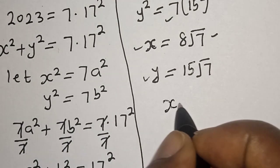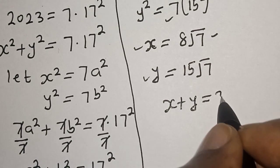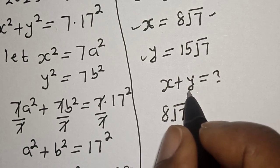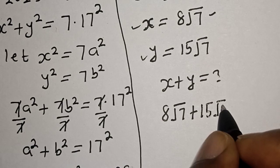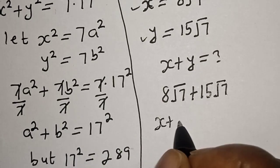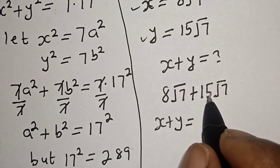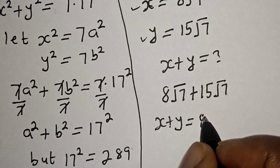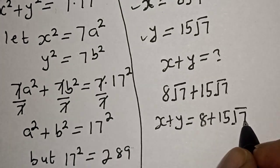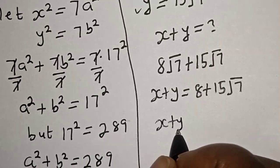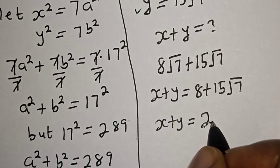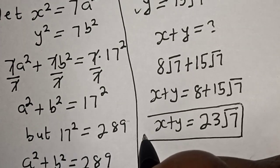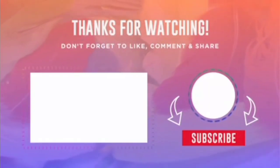The question asks for x plus y. x is 8 root 7 and y is 15 root 7. Then x plus y equals, with root 7 common, we have (8 plus 15) root 7, and x plus y is equal to 23 root 7. That is our final answer. If you enjoyed the class, please don't forget to like, share, comment, and subscribe. Thank you.